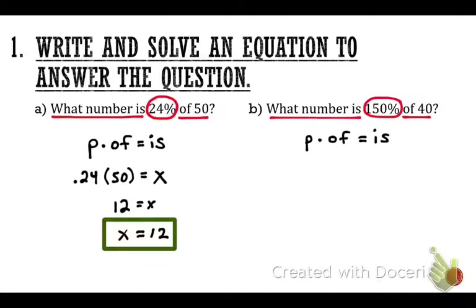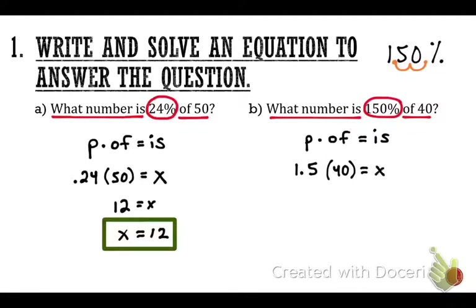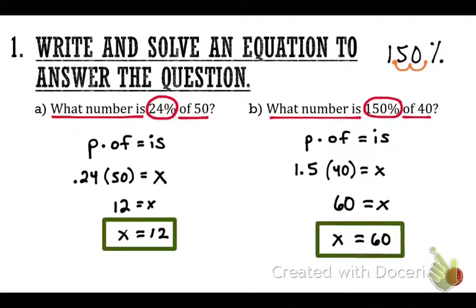We have to change the percent to a decimal. With 150%, the imaginary decimal is behind it — move two places left to get 1.5. Equation: 1.5 times 40 equals x. Put that into your calculator: 1.5 times 40 equals 60. So x equals 60 is our final answer for problem B.